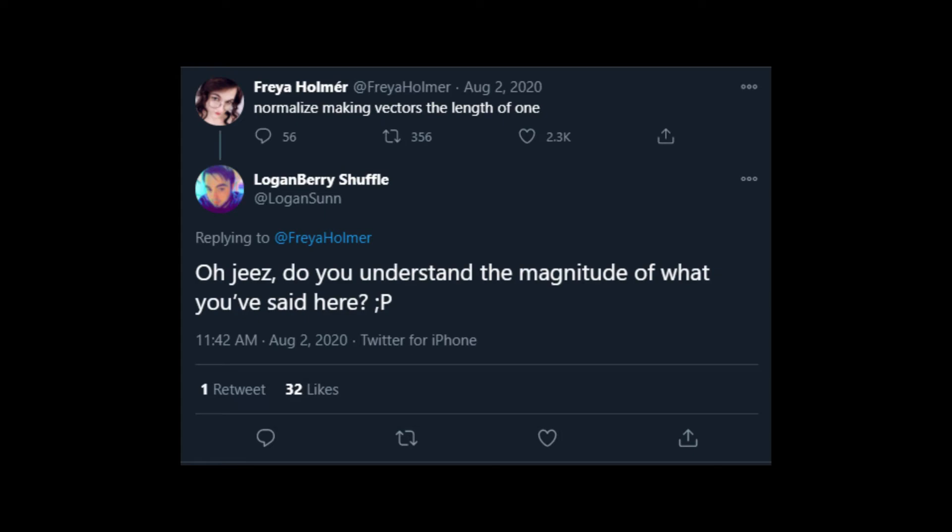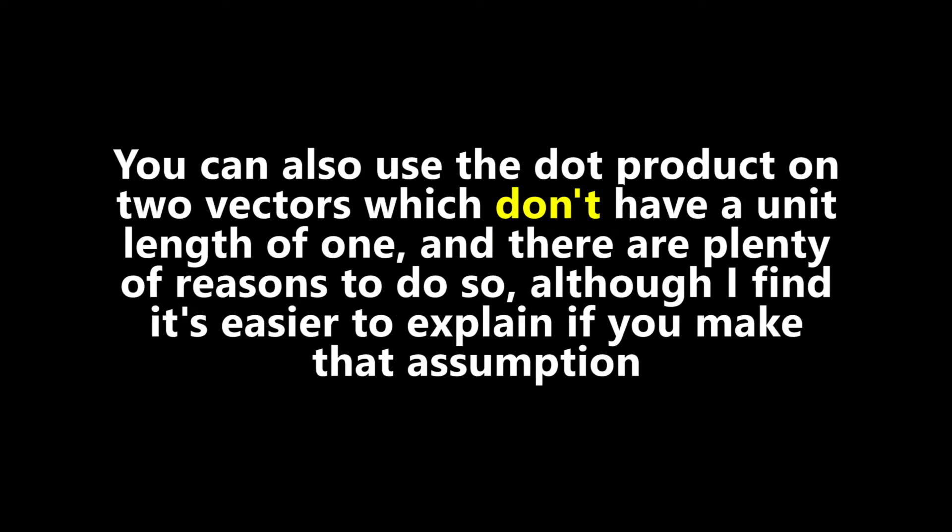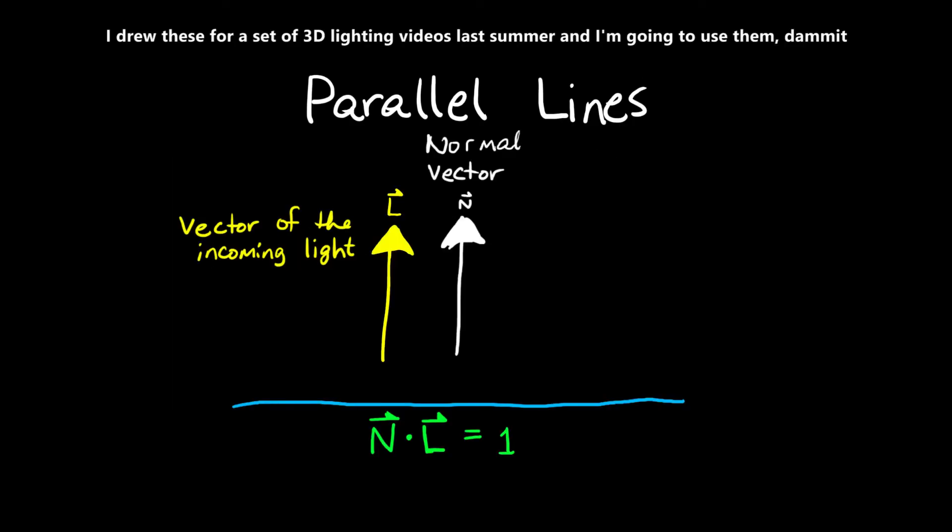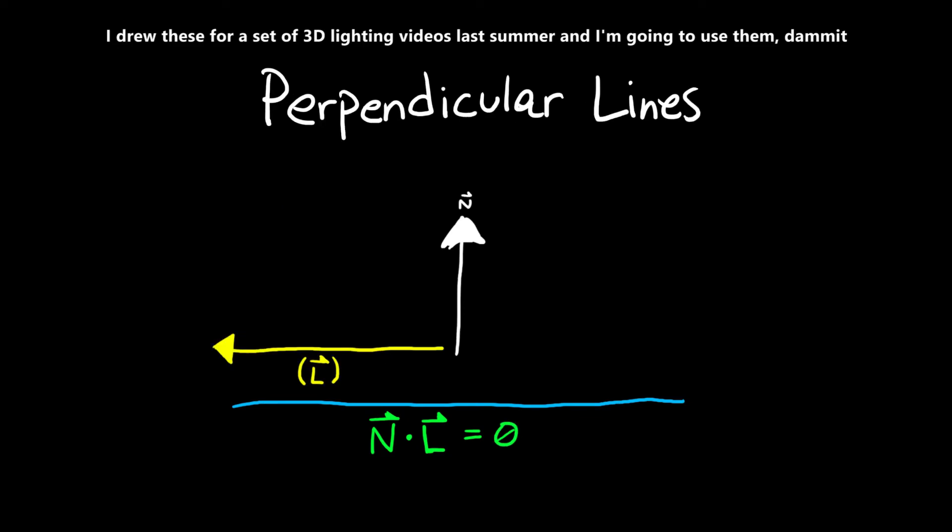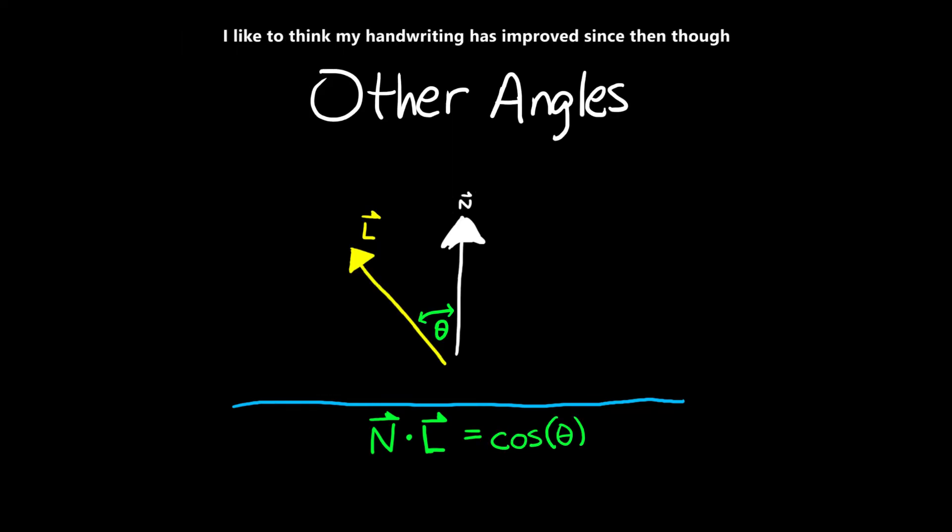Other important operations that you can do on vectors are the dot and cross products. The dot product in particular is used quite a lot in shaders and in computer graphics. The dot product of two vectors will return a single value. If you have two vectors which have a unit length of one, if they're pointing in the same direction the dot product will be equal to one. If they are perpendicular the dot product will be zero, and if the two vectors are pointing in the opposite direction the dot product will be negative one. And if the two vectors are at some other angle to each other, then the dot product will be somewhere between negative one and positive one.